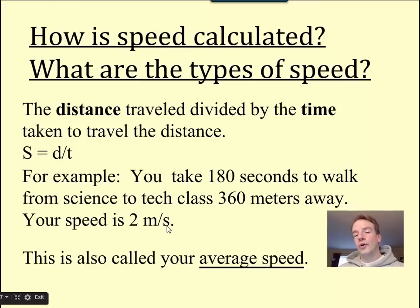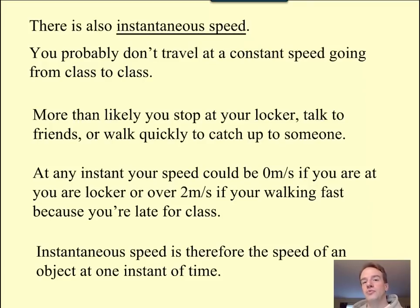This is what's called your average speed. Not to be confused with instantaneous speed. Now, you probably, when you go class to class, you don't go at a constant speed. More than likely, you stop at your locker, you talk to friends, or walk quickly to catch up with someone. At any instant, your speed could be 0 meters per second if you are at your locker, or 2 meters per second if you're walking fast because you're late for class.